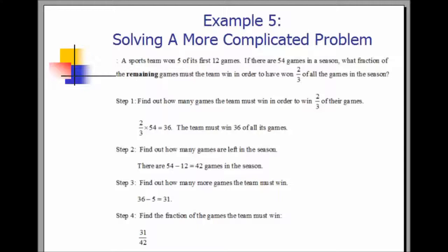Example 5: solving a more complicated problem. A sports team won five of its first 12 games. If there are 54 games in a season, what fraction of the remaining games must the team win in order to have won two-thirds of the games in the season? First, find how many games the team must win: two-thirds of 54 is 36. There are 54 minus 12 equals 42 games remaining in the season. If they want to win 36 and have won five, they need to win 31 more games. Therefore, they must win 31 out of the remaining 42 games.